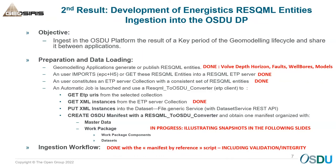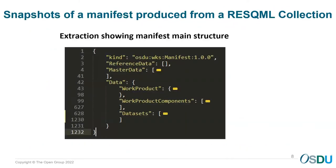In summary, the extraction is organized around the manifest main structure, which includes the kind system, reference data, master data, the work product, work product components, and data sets. This shows that we are not just talking — we are working in depth and executing what is necessary both in ResQML and OSDU. I will show you the different manifests just after.